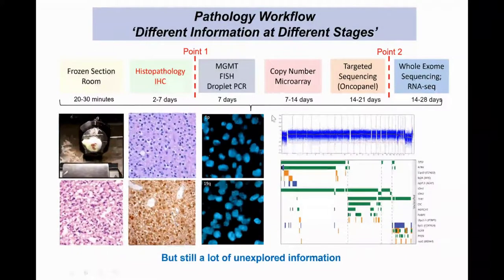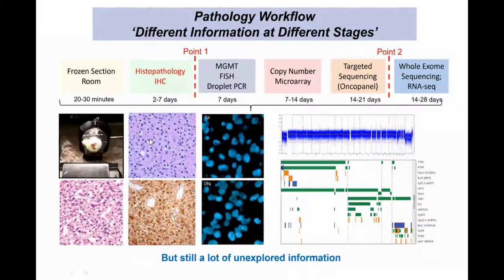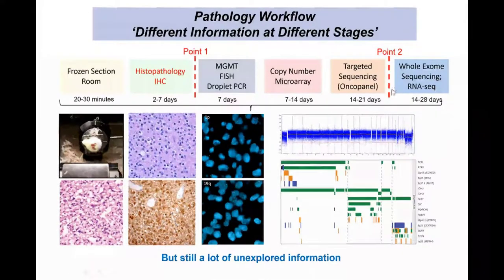This is an example of our pathology workflow. In the operating room, we receive tissue fragments that we freeze and perform tissue sectioning and H&E review. A few days later, we have formalin-fixed paraffin-embedded (FFPE) tissue with better morphology on H&E, and we perform IHC to provide a first diagnosis. We then amend the diagnosis when we receive genetic information from FISH, PCR, methylation studies, copy number analysis, or targeted sequencing — providing an integrated diagnosis two to three weeks later. Still, a lot of information is left un-extracted in these specimens.